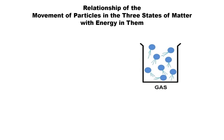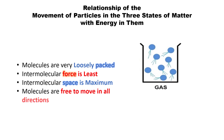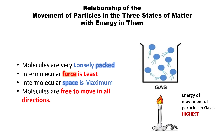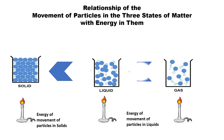In gas, the molecules are far away from each other — very loosely packed. Intermolecular force is least and intermolecular space is maximum. Molecules are free to move in all directions. When we provide heat to gas molecules, they move randomly in all directions with greater velocity, so their kinetic energy increases. The energy of movement of particles in gas is highest. So: energy of movement in solid is less than in liquid, which is less than in gas — meaning in solids the energy of movement is least and in gas it is highest.